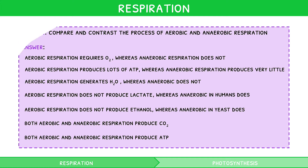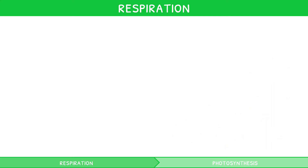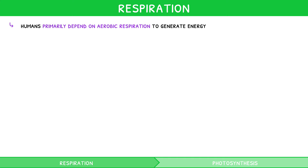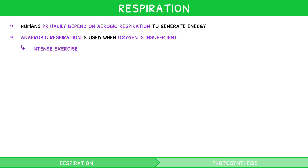But why is this useful? Humans primarily depend on aerobic respiration to generate energy. However, sometimes anaerobic respiration is used when oxygen is insufficient. For example, intense exercise, such as sprinting or weightlifting, results in a build-up of lactate in muscle, limiting the amount of anaerobic respiration we can do, as this lactate forms lactic acid, inducing pain.